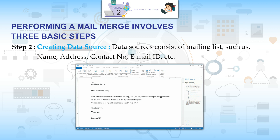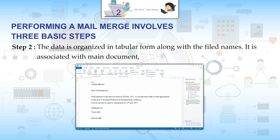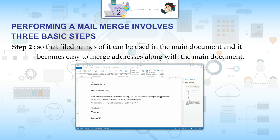Step 2: Creating the Data Source. Data sources consist of mailing lists such as name, address, contact number, email ID, etc. The data is organized in tabular form along with the field names. It is associated with the main document so that field names can be used in the main document, making it easy to merge addresses along with the main document.